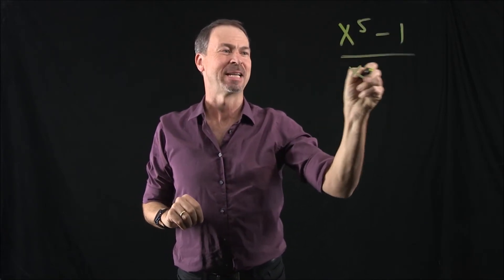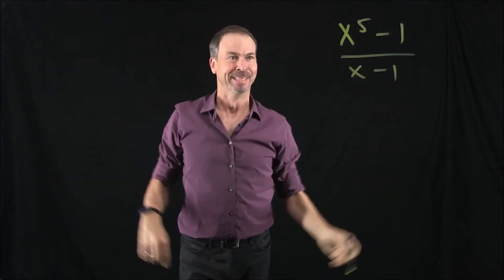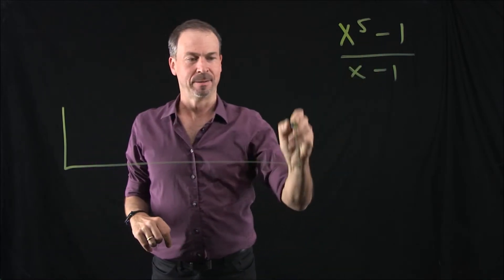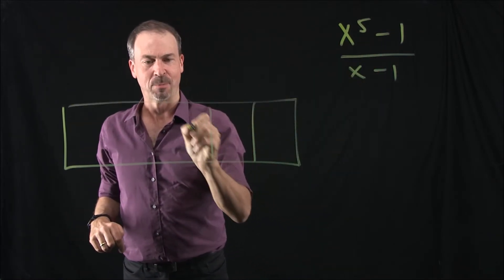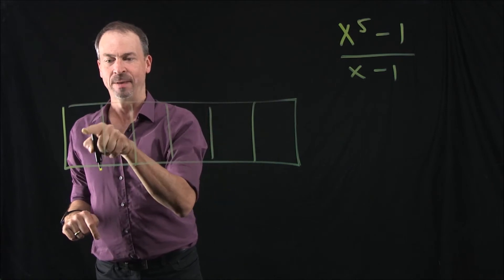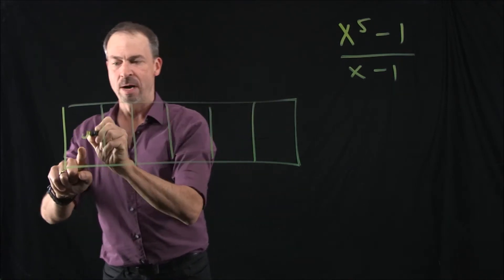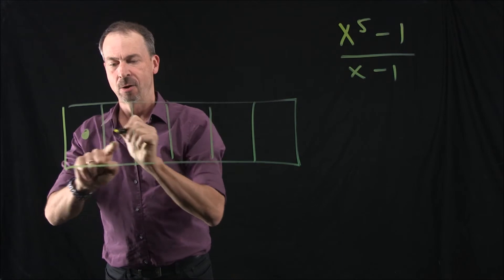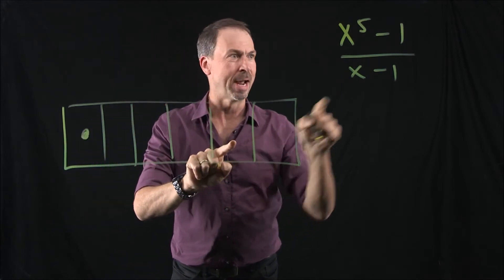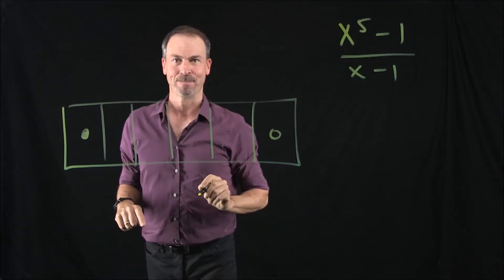Alright, board's clean. Let's do another example. Let's do, say, x to the fifth minus one divided by x minus one. Let's try it. The numerator, lots of boxes. So there is a one box, an x box, x squared, x cubed, x to the fourth, x to the fifth. One x to the fifth. Yep. No x to the fourths, no x cubes, no x squareds, no x's, and one anti-one.